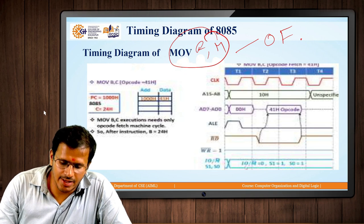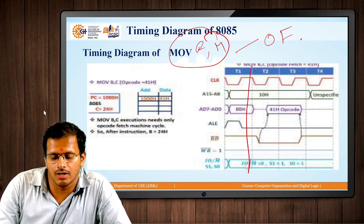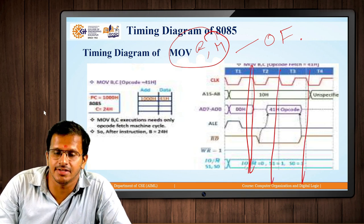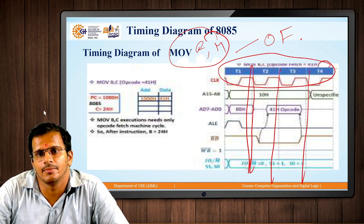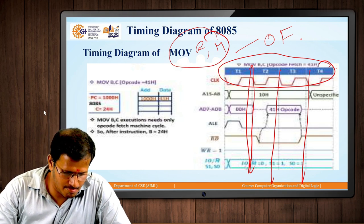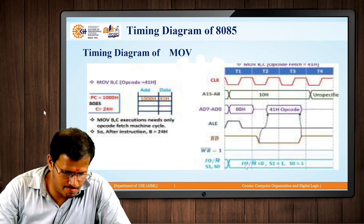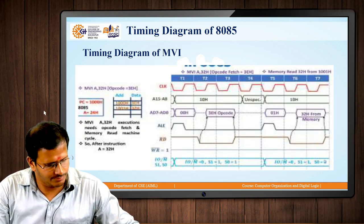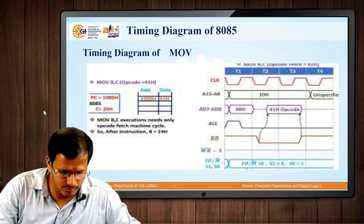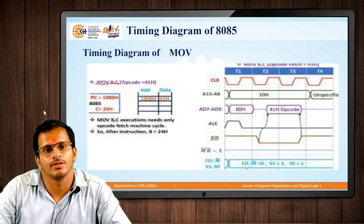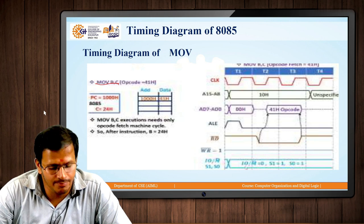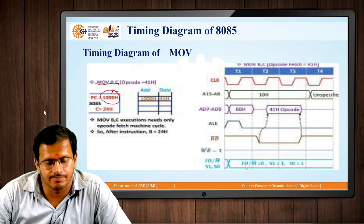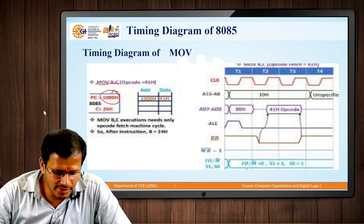Through the diagram, the T-states are represented: T1, T2, T3, and T4. We are using the instruction MOV B, C where the content from the C register is passed to the B register. The program counter value is taken as 1000H.